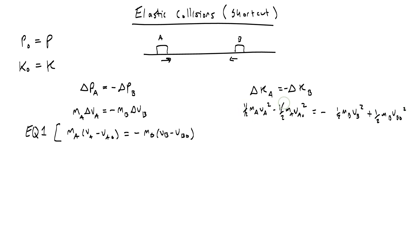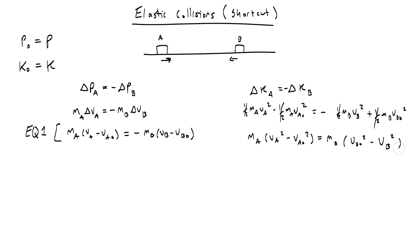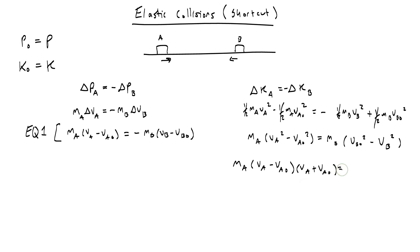Next I'm going to get rid of the one-halves, because there's a one-half in every term. Then I'm going to factor out the mass on both sides, so on the left I get MA times (VA squared minus VA naught squared) equals MB times (VB naught squared minus VB squared). Because these are differences of squares, I can factor further: (VA minus VA naught)(VA plus VA naught) equals (VB naught minus VB)(VB naught plus VB). We'll call this equation 2.